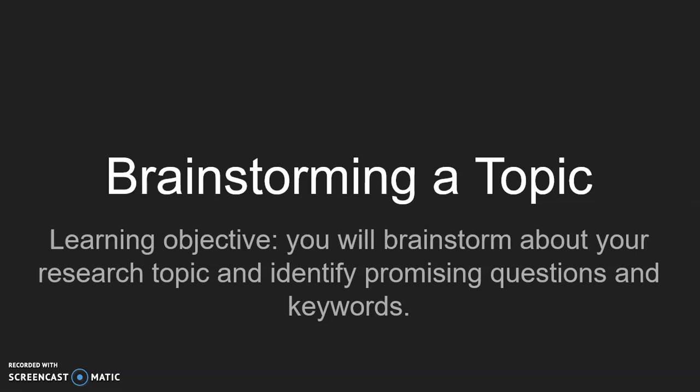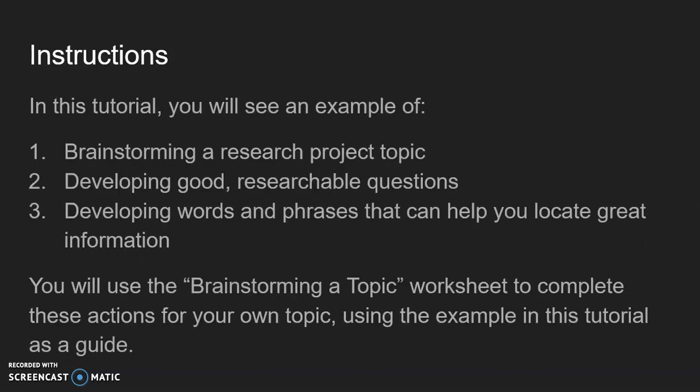This tutorial is about brainstorming a research topic. We'll go through the actions with an example, and then you'll have an opportunity to brainstorm your own research topic, identify promising questions, and keywords or search terms. You'll begin with this tutorial, which will have an example of brainstorming a research topic, developing good researchable questions, and developing words and phrases — the search terms that will help you locate great information. Then you'll use the brainstorming a topic worksheet to complete these actions for your own research topic, using the example in this tutorial as a guide.